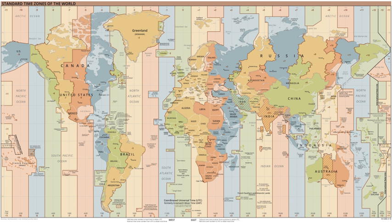Coordinated Universal Time is the primary time standard by which the world regulates clocks and time. It is within about one second of mean solar time at zero degrees longitude, and is not adjusted for daylight saving time.